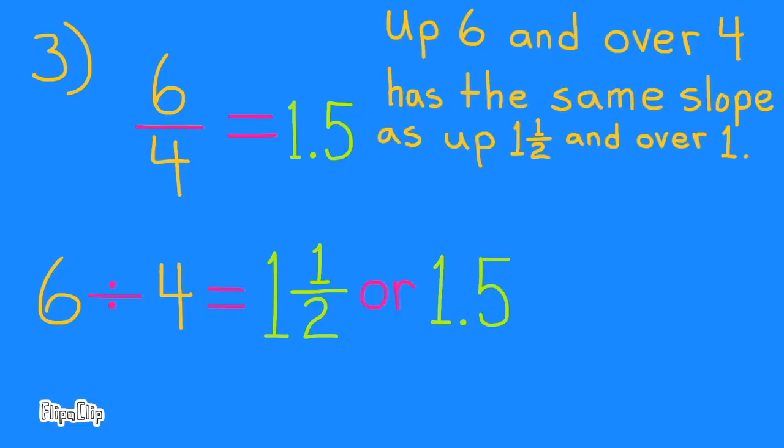Well, as you can see here, they're both correct, because 6 over 4, or 6 divided by 4, is 1.5. Another way to look at it is up 6 and to the right 4 has the same slope as up 1.5 and to the right 1. And that would be a slope of 1.5, because 1.5 over 1 means 1.5 divided by 1. And notice that a slope of 6 over 4 would be the same, because 6 is 1.5 times greater than 4.